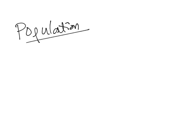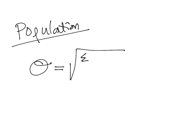First let's talk about a population. If you know the data given is a population, then the standard deviation is calculated as sigma equals the square root of the sum of squares over the sample size, capital N. The numerator is found by taking each data value minus the mean of the data set, squaring that value for each data point, and then adding them all together.